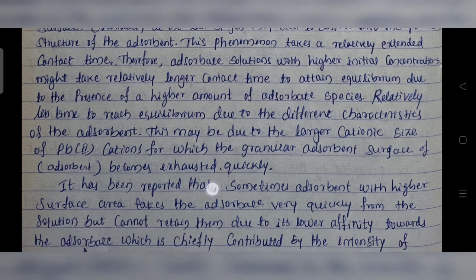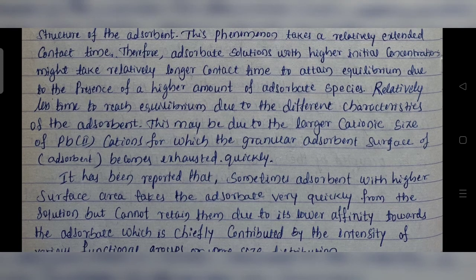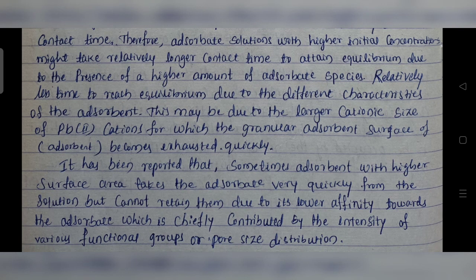It has been reported that sometimes adsorbents with higher surface area take up the adsorbate very quickly from the solution but cannot retain them due to lower affinity towards the adsorbent. This is simply contributed by the intensity of various functional groups or pore size distribution. The larger cationic size of Pb2+ cations may cause the granular adsorbent surface to become exhausted quickly.